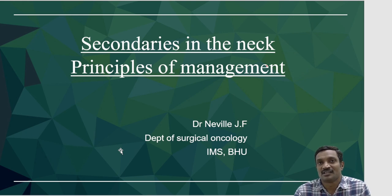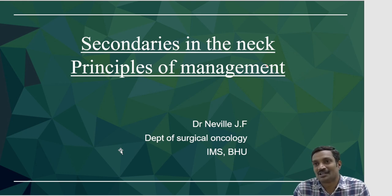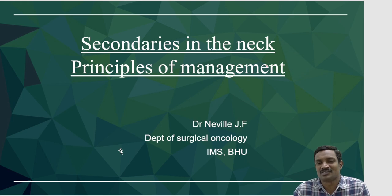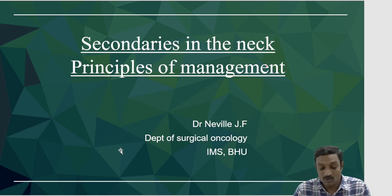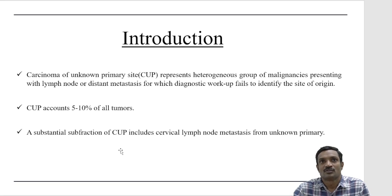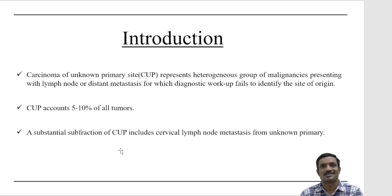Five percent of patients when they reach the OPD will have secondaries without any identifiable primary. The patient comes with a secondary in the cervical lymph node — the node is palpable, FNAC is positive for malignancy, but no primary is found in the oral cavity or head and neck area. Similarly, patients can come with liver metastasis or bone metastasis without any primary, and you have to search for the primary.